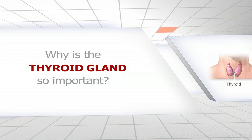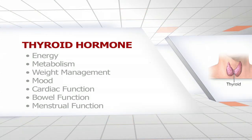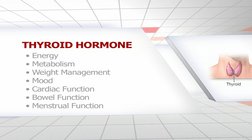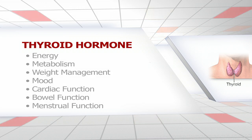The thyroid gland is a little butterfly-shaped gland located in the neck that secretes thyroid hormones. Thyroid hormones are important for many different functions in the body — they help with energy metabolism, weight management, mood, cardiac function, bowel function, and menstrual function. So even though it's a small gland, it has very far-reaching effects throughout the body.